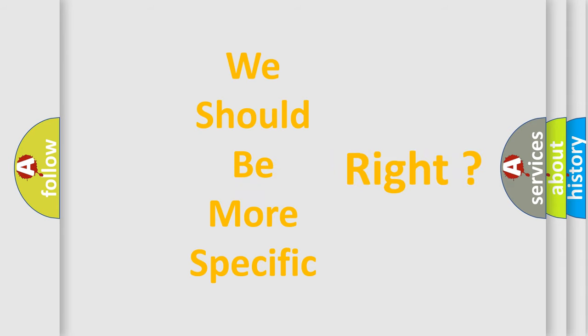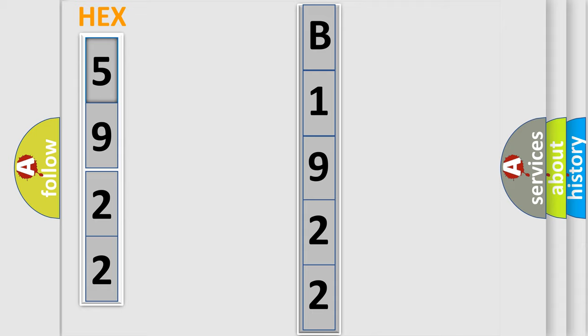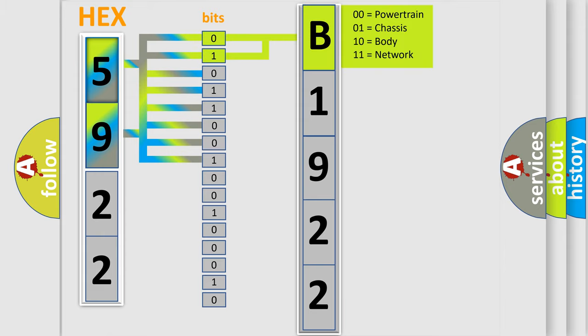The following demonstration will help you look into the world of software for car control units. You can move the video a bit further. The error code is split into two bytes consisting of 16 bits. One bit is the basic unit that each computer works with. The bit has two logical states: Zero, low level. One, high level.